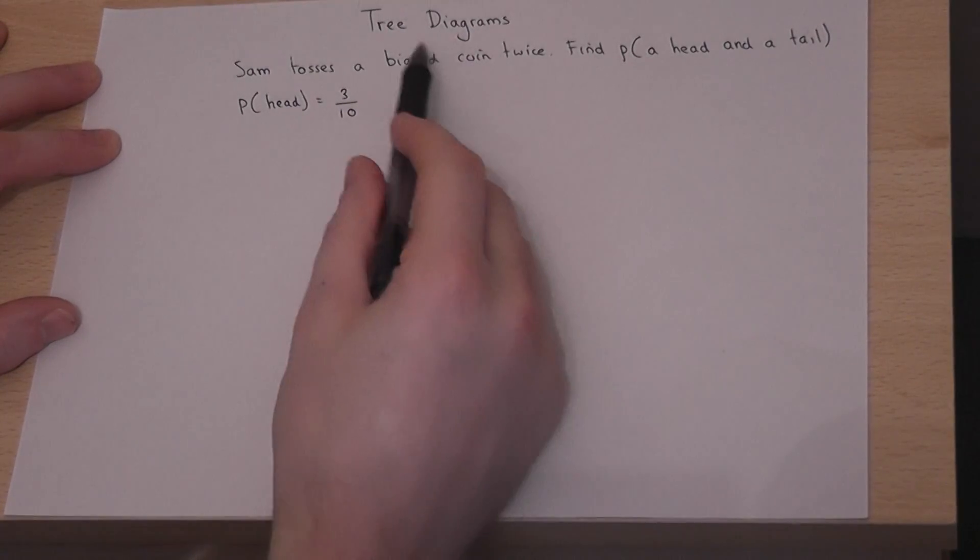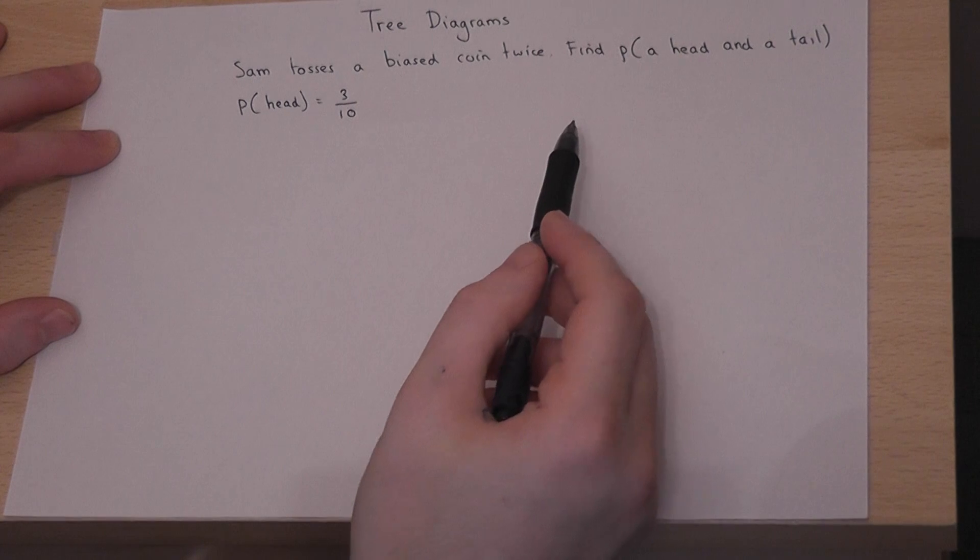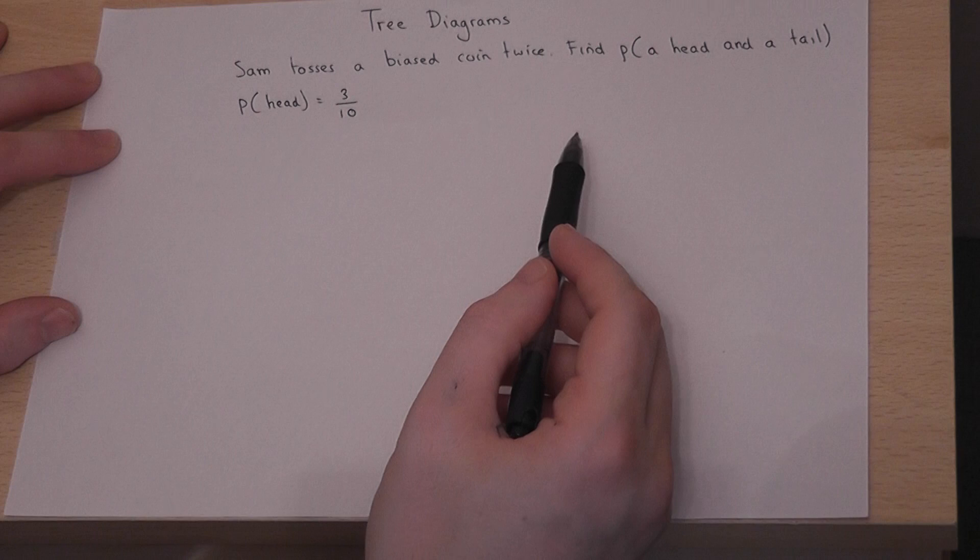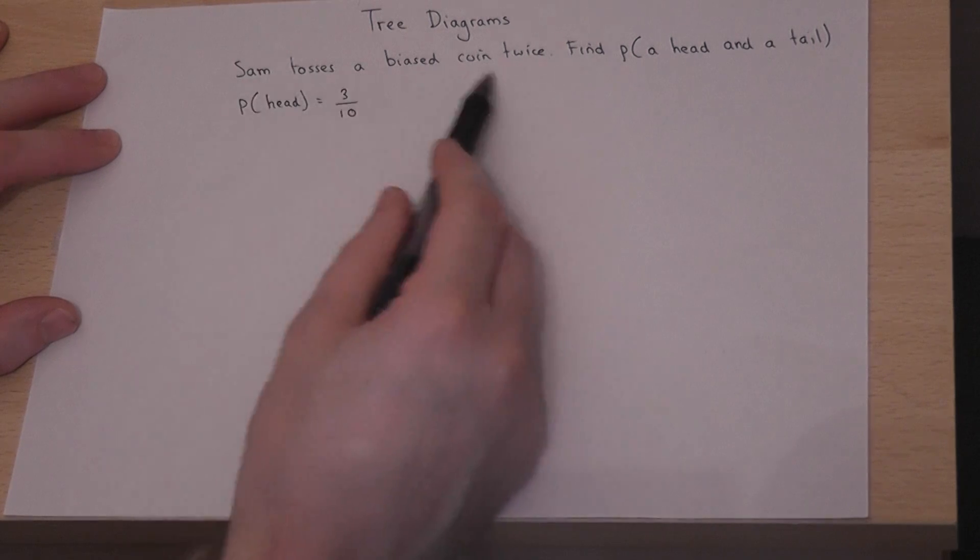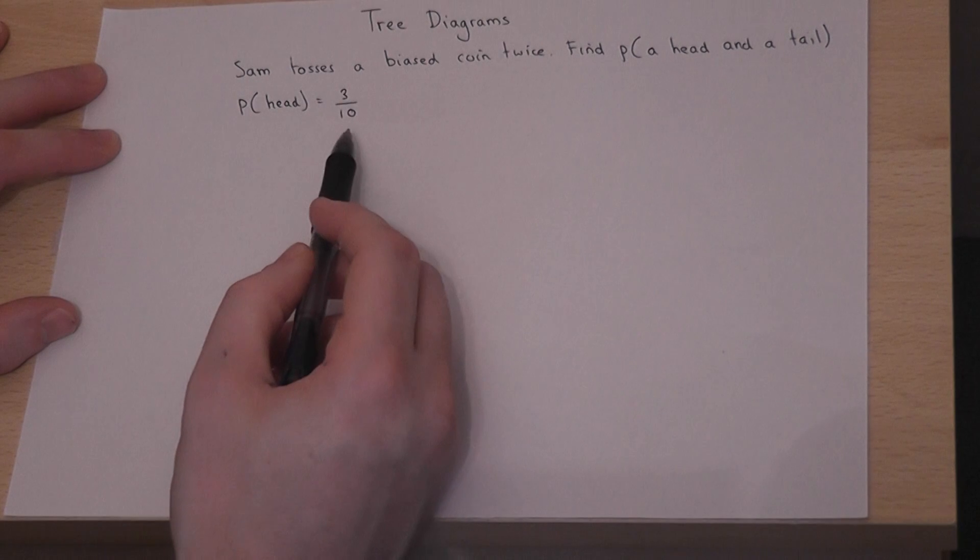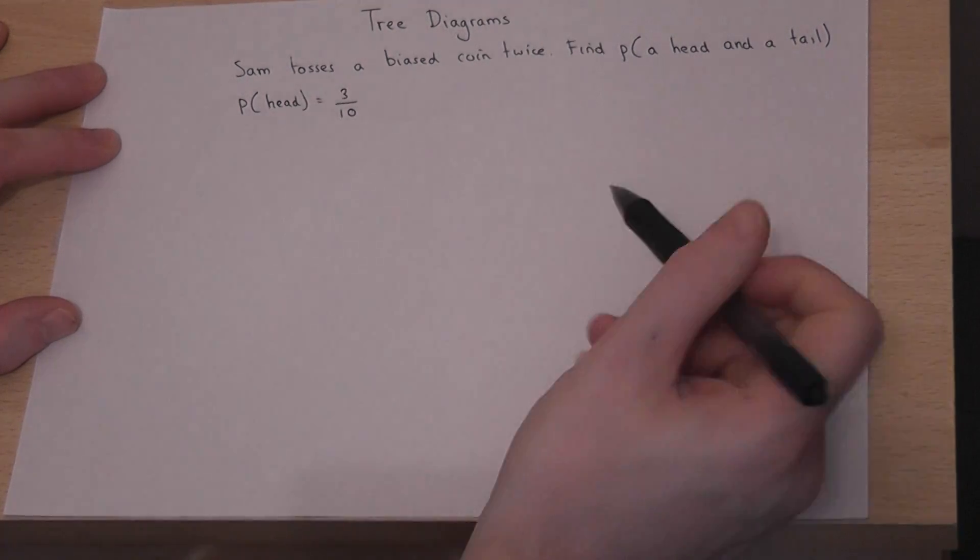This video looks at how we can use tree diagrams to solve potentially quite complex problems in probability. Now suppose Sam's got a biased coin such that the chance of getting a head is 3 out of 10, and he tosses this coin twice.